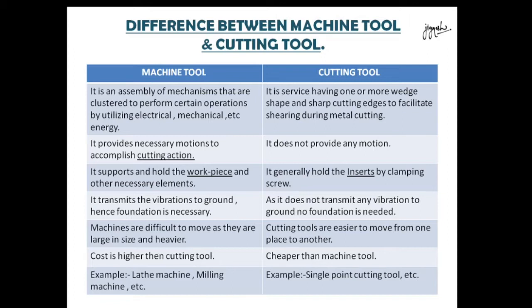The second difference: the machine tool provides necessary motions to accomplish cutting action, such as depth of cut, feed, etc., while the cutting tool does not provide any motion.